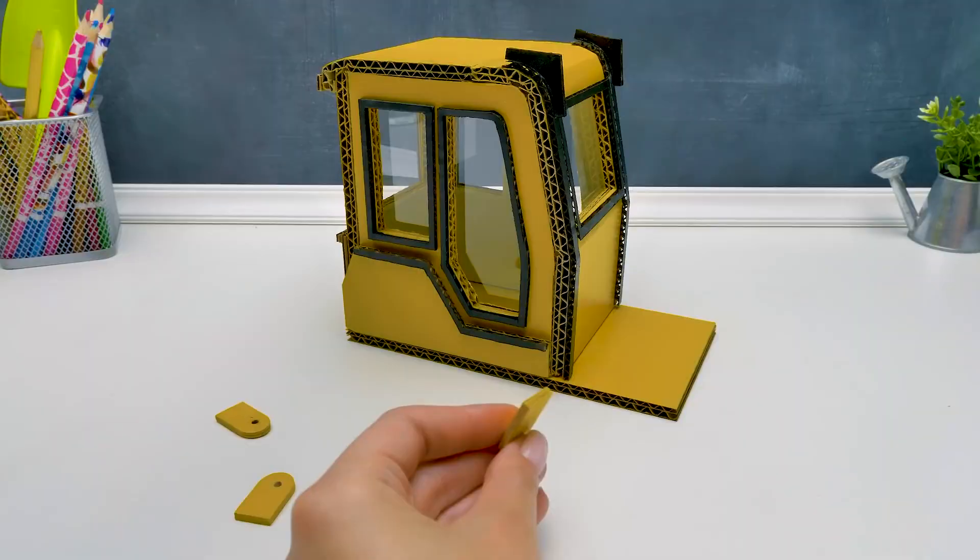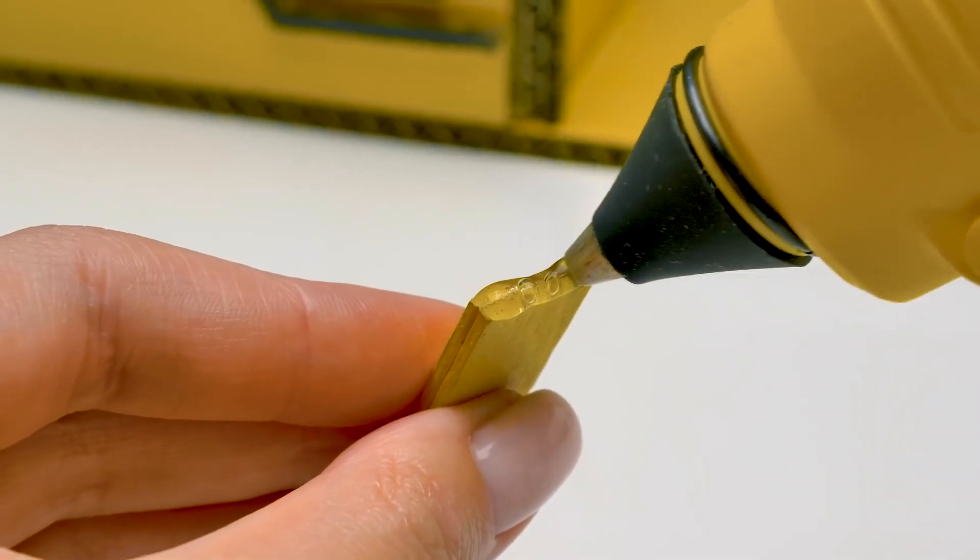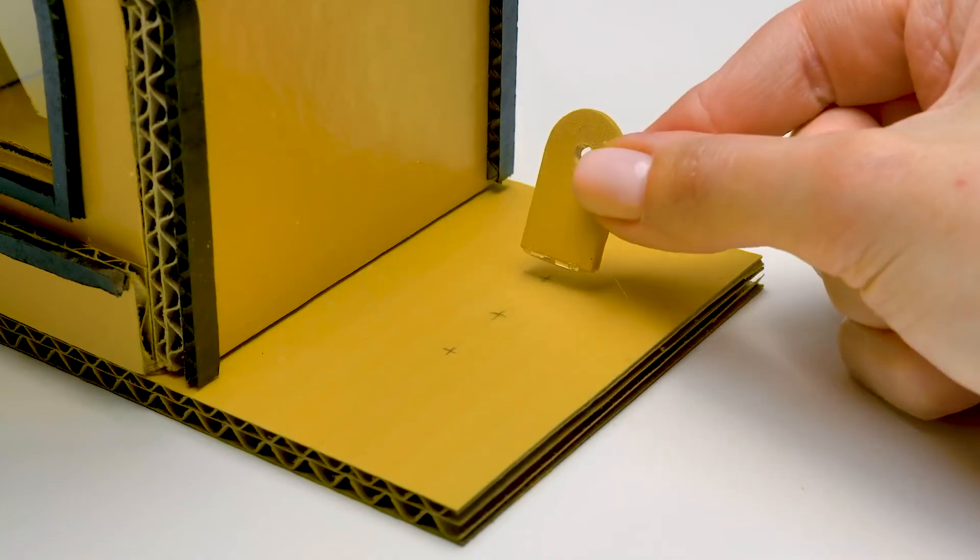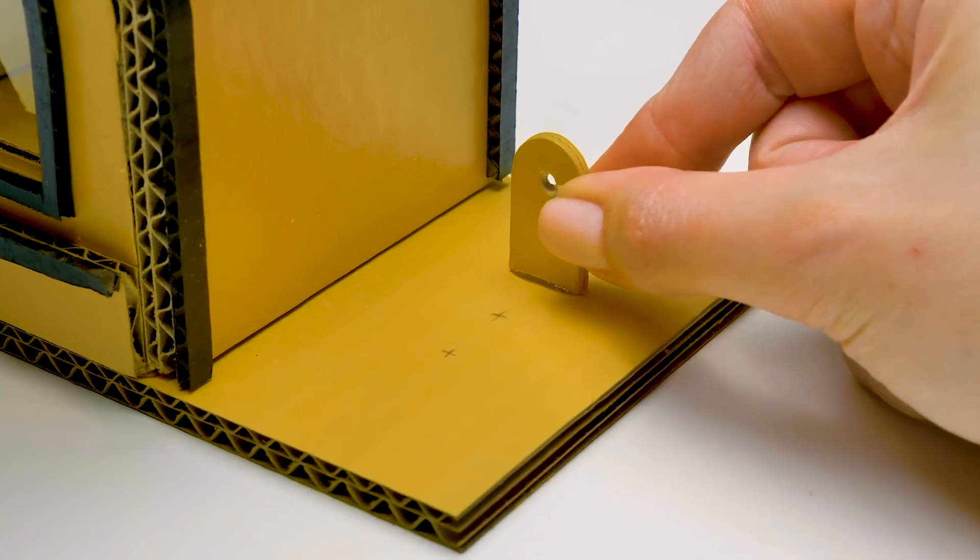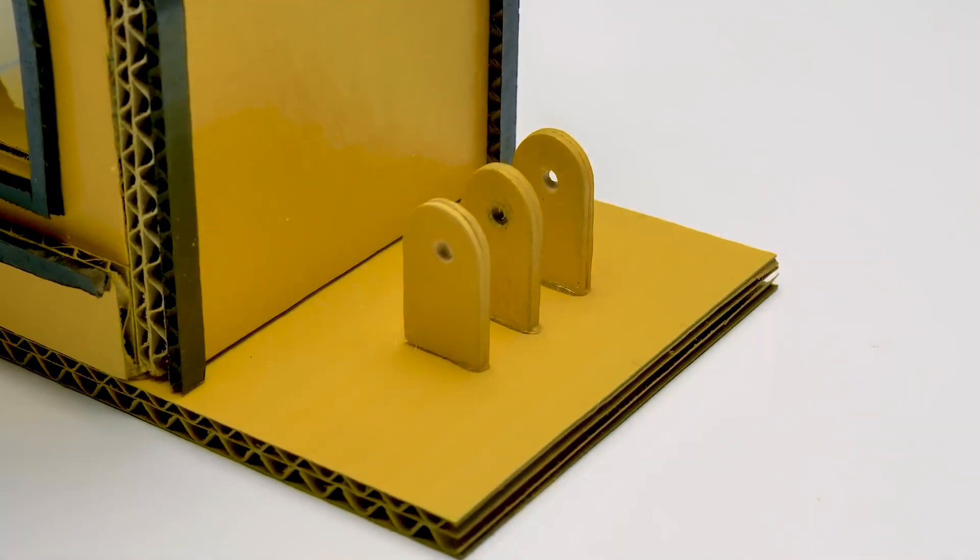First, we'll attach the arms to our JCB. Guys, be careful working with the hot glue gun. You can also ask an adult to help you! Done! Absolutely awesome!